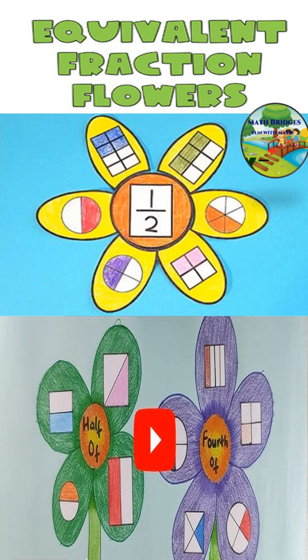This is one more way to represent it pictorially. Half by coloring, taking it to be a circle. You can take square, you can take rectangle, you can take triangle. You can divide into two equal parts and show half.